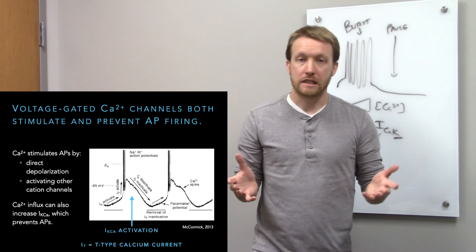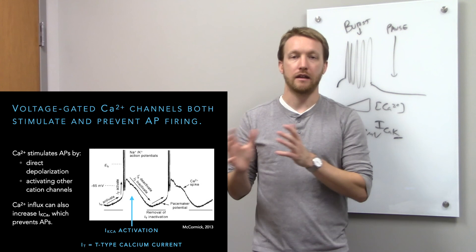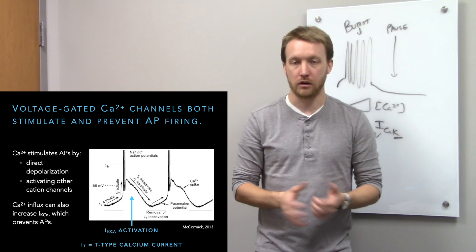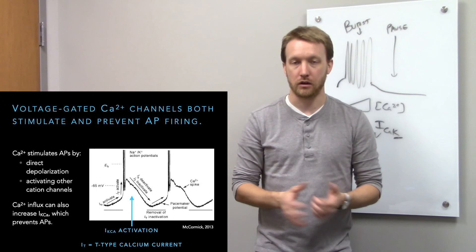When we generate the action potential it runs down the axon and we get neurotransmitter release — covered in lecture six. In the next lecture, lecture four, we'll think about what happens in the dendrites when neurotransmitters are released and electrical currents are generated, and how they move around in dendrites to affect whether neurons fire action potentials.